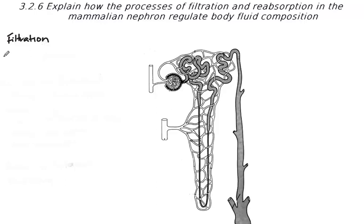Filtration occurs under pressure. This is because the capillaries leading into the glomerulus are much larger than the capillaries coming out of the glomerulus. So larger volumes of blood come in but smaller volumes are allowed to exit, which increases the pressure. Anything small enough can then cross this region in the Bowman's capsule.